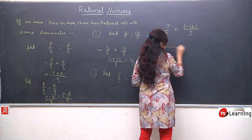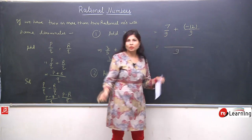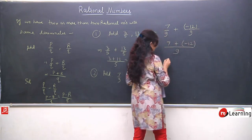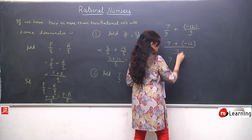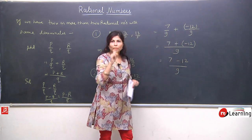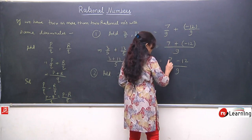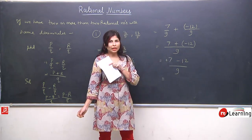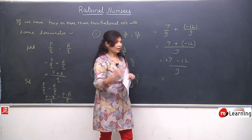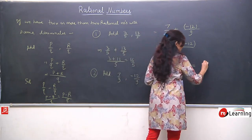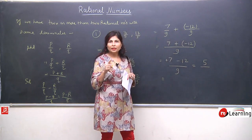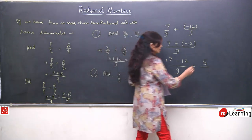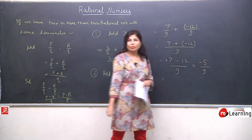We need to add 7 by 9 and minus 12 by 9. We take the LCM, which is 9. Then we open the bracket: 7 plus minus 12 — plus minus is minus, so it becomes 7 minus 12. Positive 7 minus 12: we subtract, getting 5. The greater number is 12 which is negative, so the answer is minus 5 upon 9.